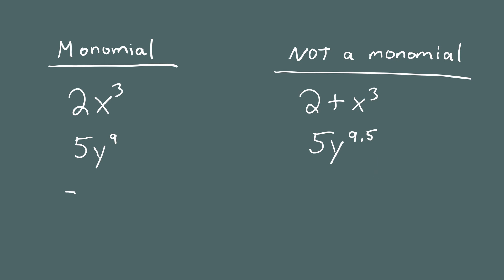Our next example is negative 6z. The number in front does not have to be positive — it can be negative like here. And the exponent of z? If we don't write the exponent, that means the exponent is one, which is a positive integer. Now compare that with negative 6 times z to the negative first power. We have a number times a variable, but the exponent is an integer that is not positive. For that reason, negative 6z to the negative 1 is not a monomial.